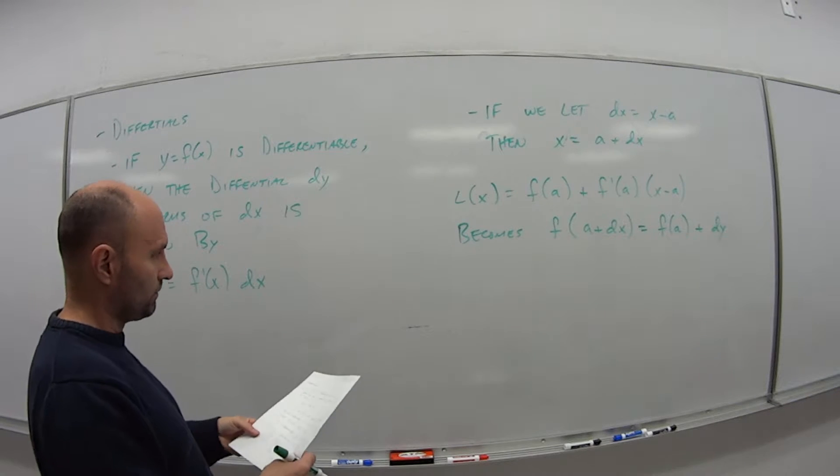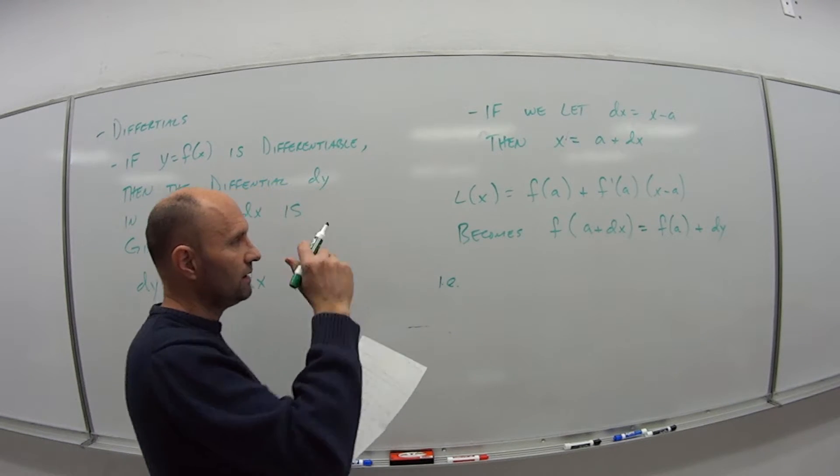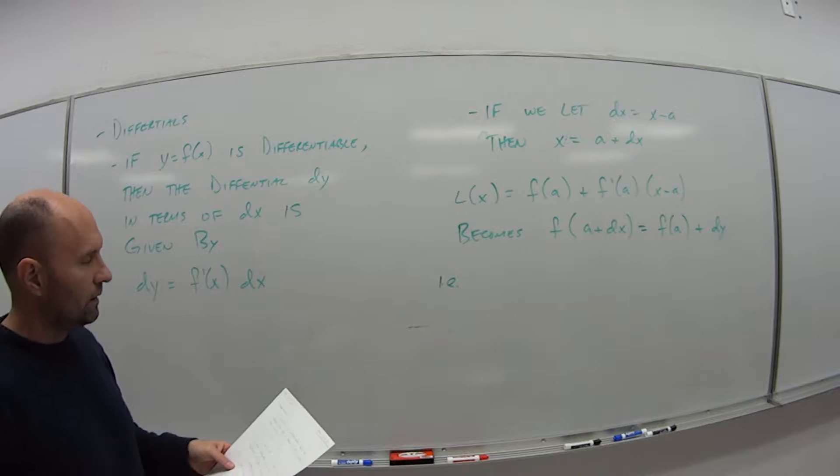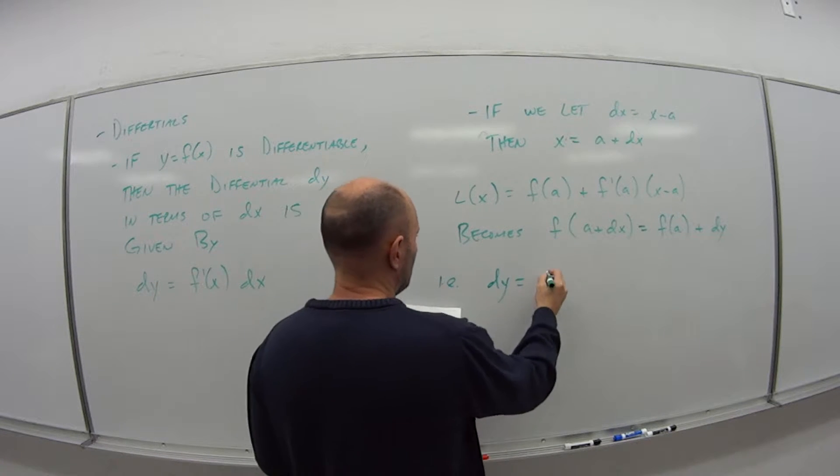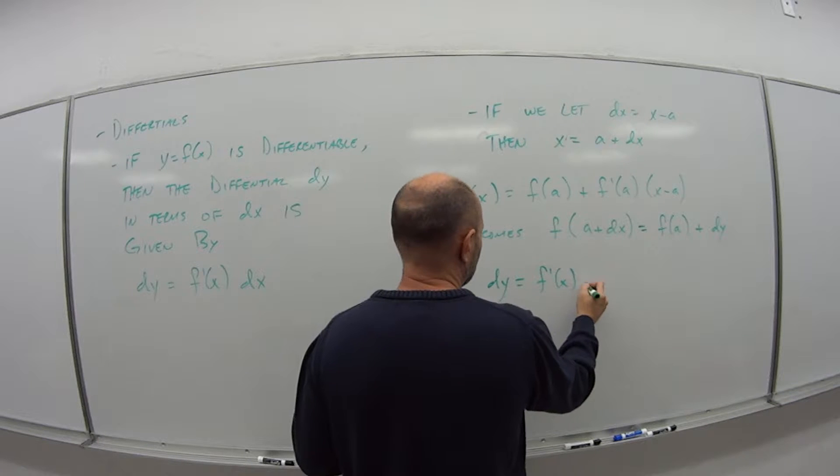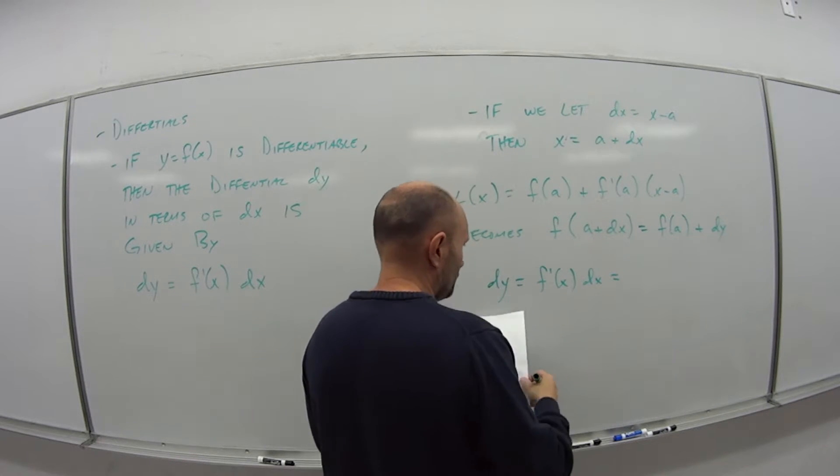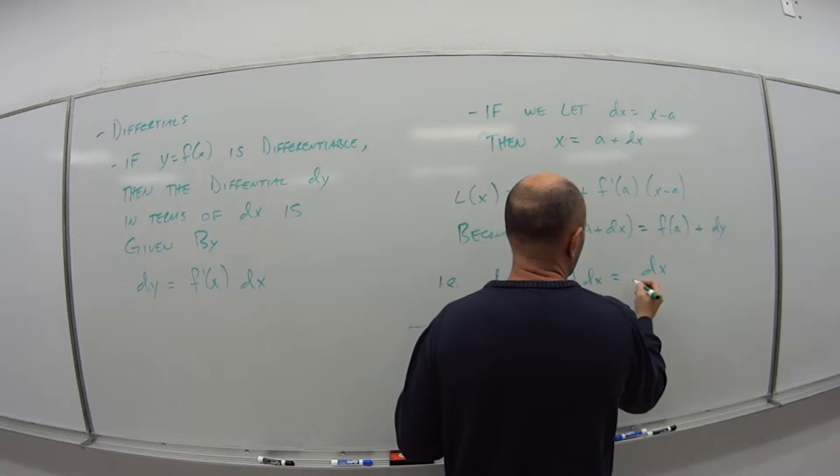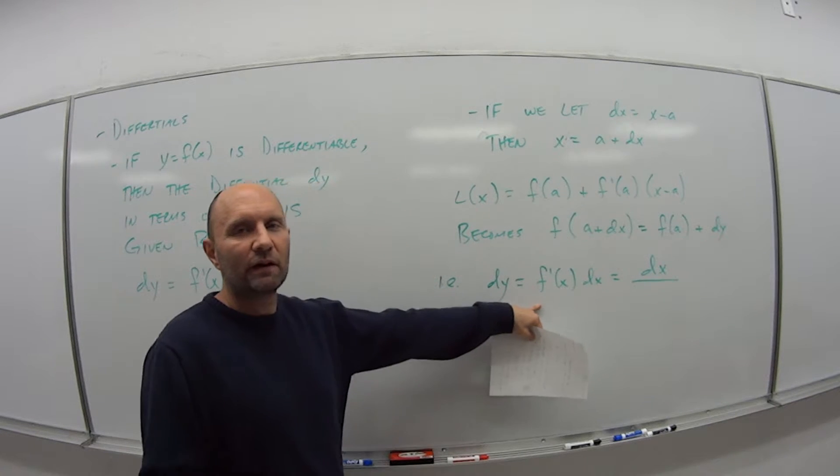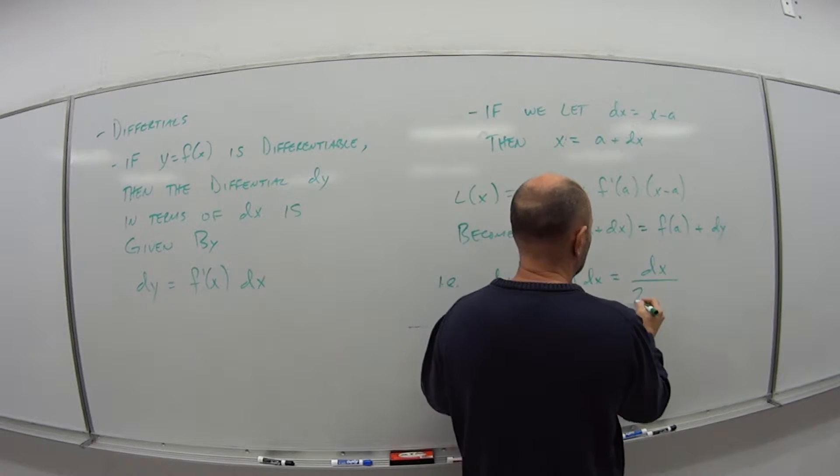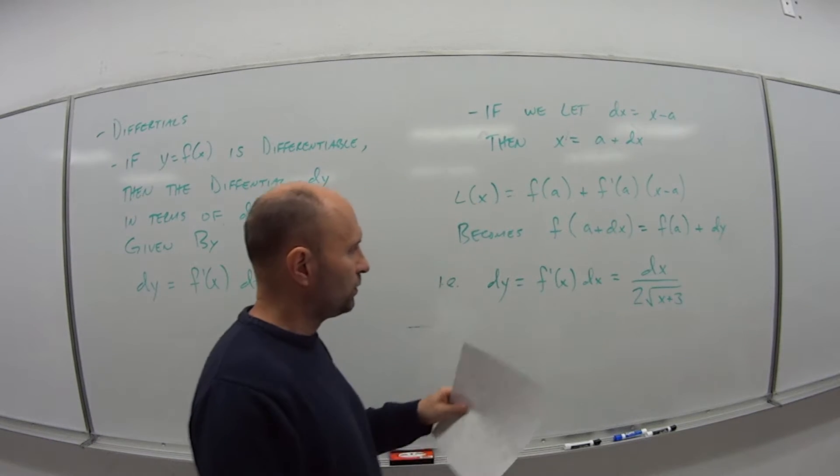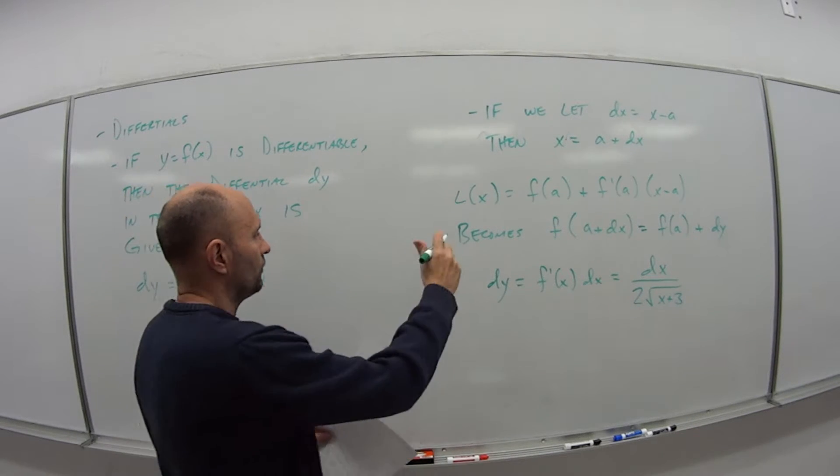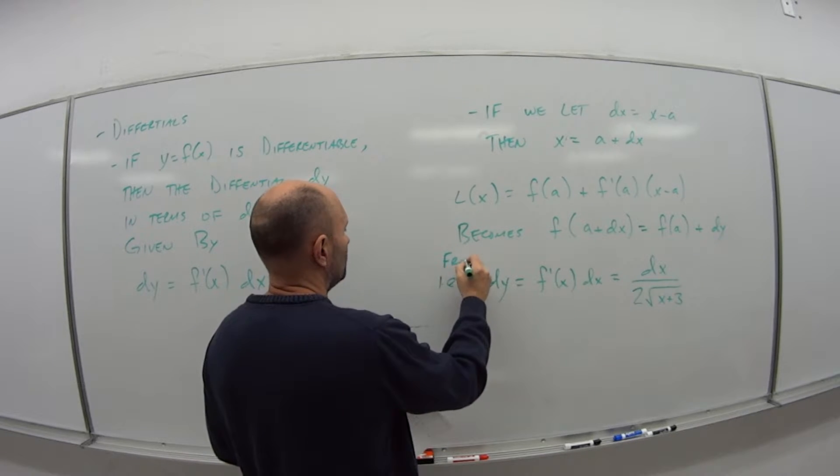Using that, so for example, in the previous example that we did at the end of video one, we could say dy is equal to f prime of x dx, which is dx over 2 times the square root of x plus 3. And so again, this is from the example in video one.